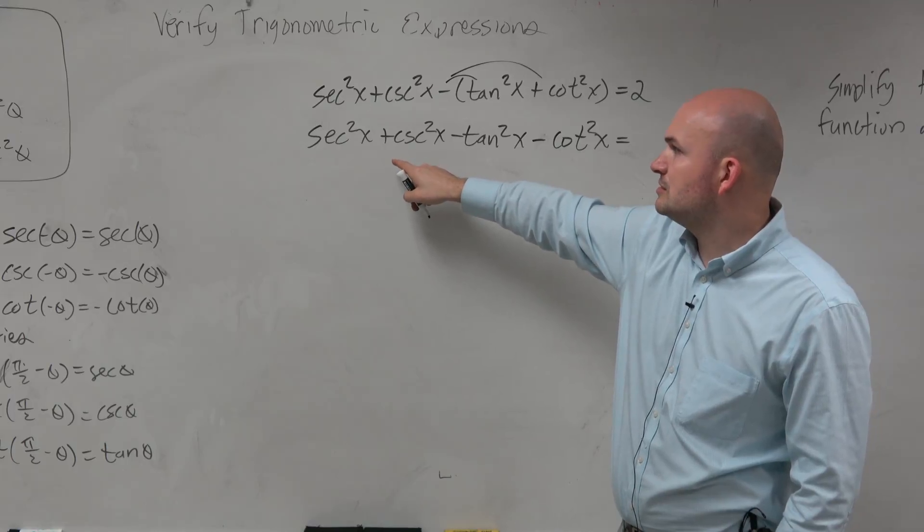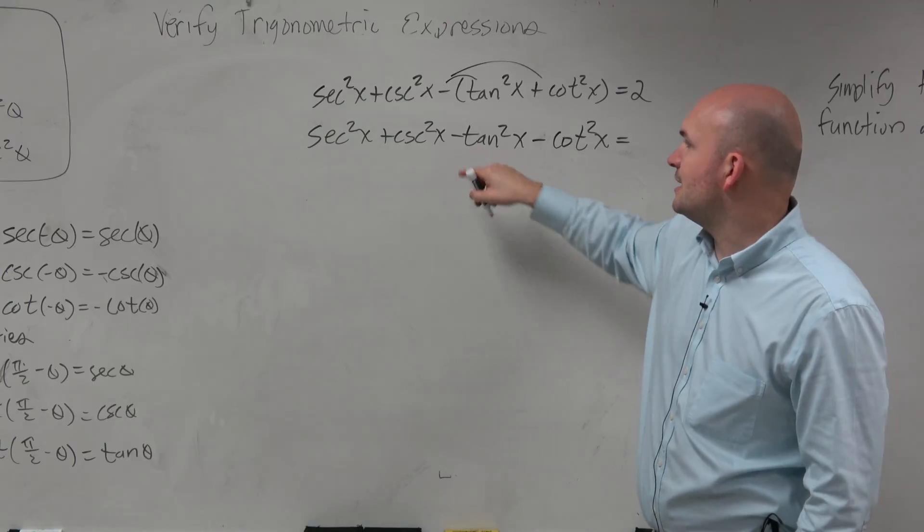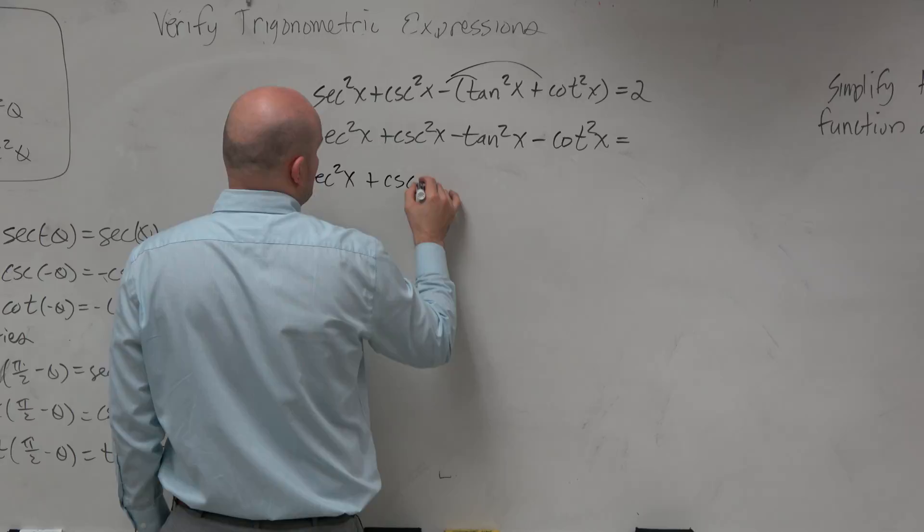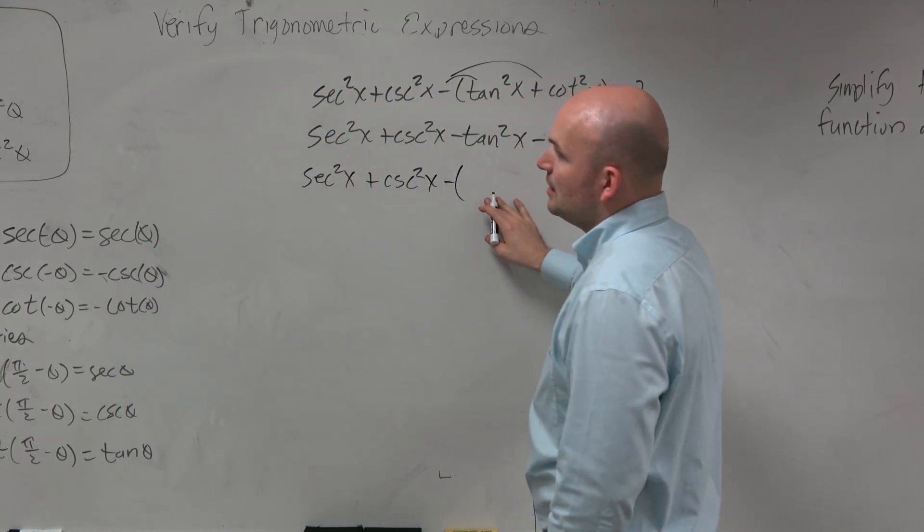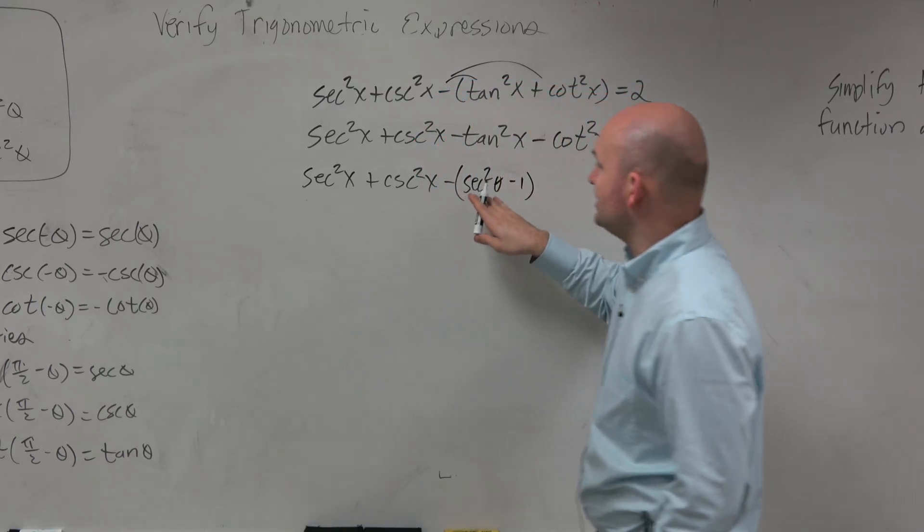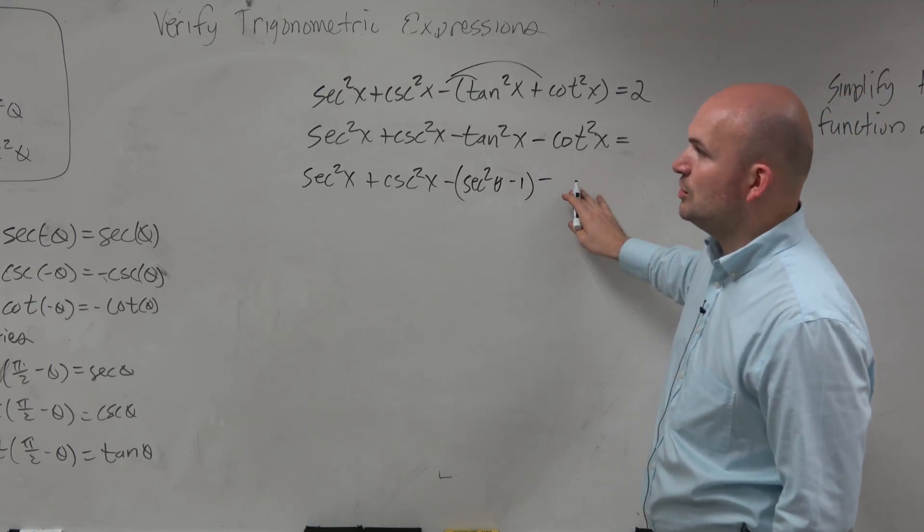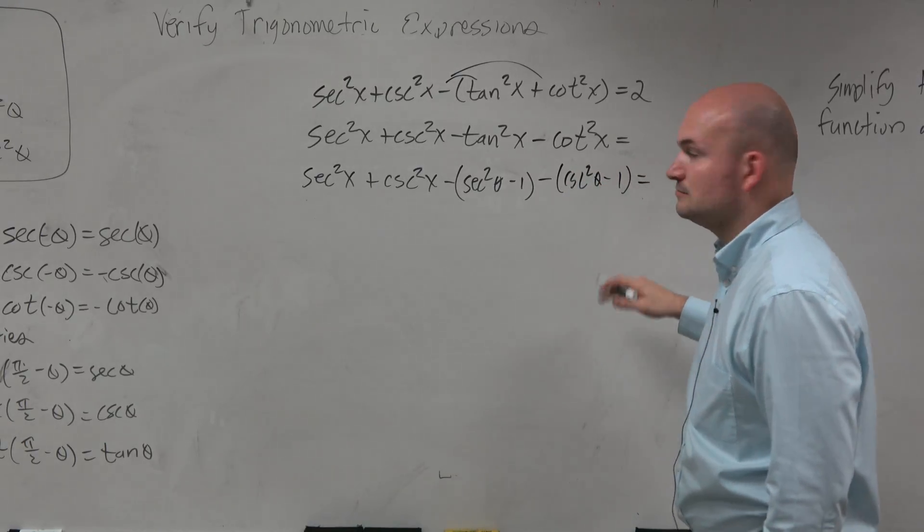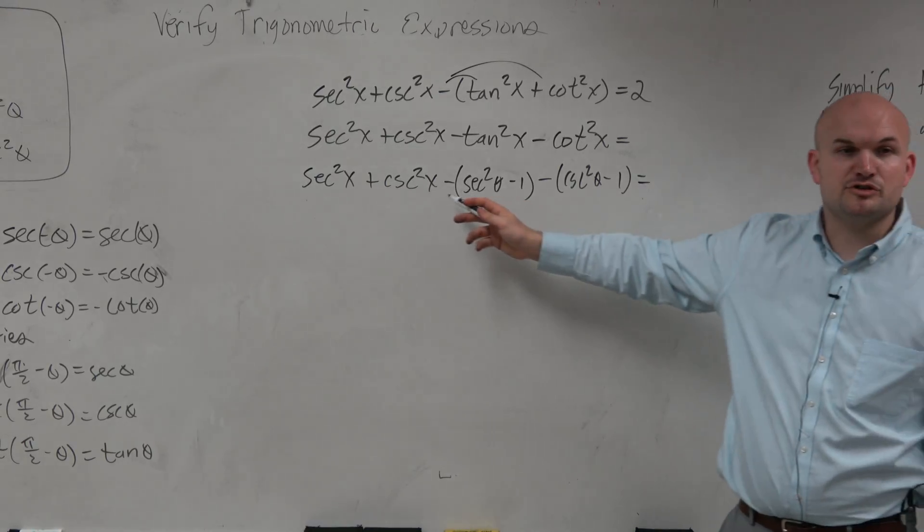Or why don't I switch? Yeah, that's what I did. I was doing tangent. Yeah, so why don't we do that for the cotangent and the tangent? So therefore, I have secant squared of x plus cosecant squared of x minus. Now, again, make sure you guys are using parentheses. Otherwise, you're going to get mixed up. So I'm replacing tangent with secant squared of theta minus 1.